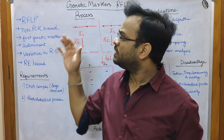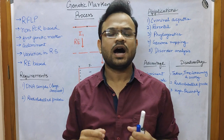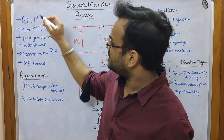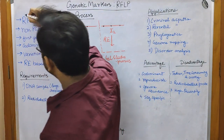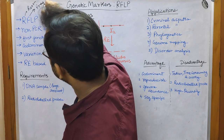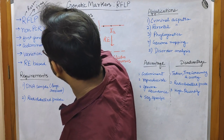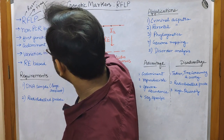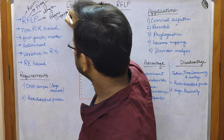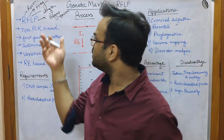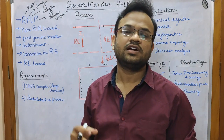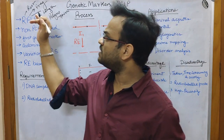Let us understand what RFLP is. As the name suggests, the R stands for Restriction, F stands for Fragment, L stands for Length, and P stands for Polymorphism. So in complete sense, RFLP is Restriction Fragment Length Polymorphism.